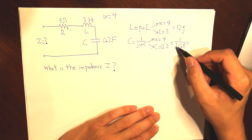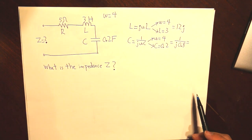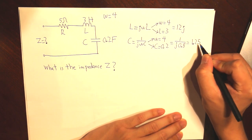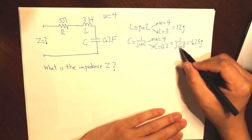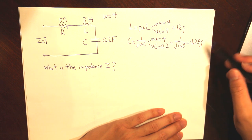What we get is 1 over J0.8. And then if you want to put the J in the numerator, that is equal to 1.25. And then we have the negative J. Because based on our complex identities, 1 over J is equal to negative J.